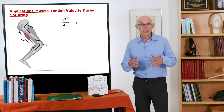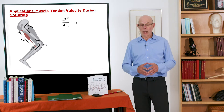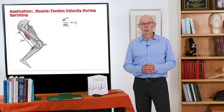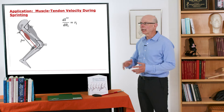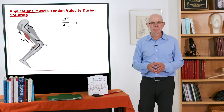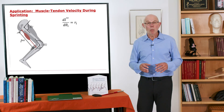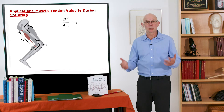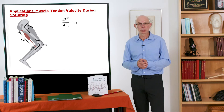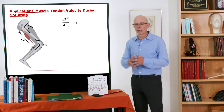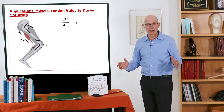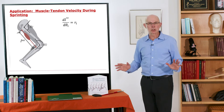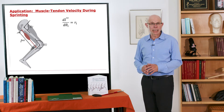Let's look at another example of a useful calculation we can make with analyses of musculoskeletal geometry: analysis of the muscle-tendon velocity during sprinting. Why might we want to study muscle-tendon velocities in sprinting, particularly of the hamstring muscles? Hamstring muscles are very frequently injured in many different sports, and it's a pretty devastating injury.